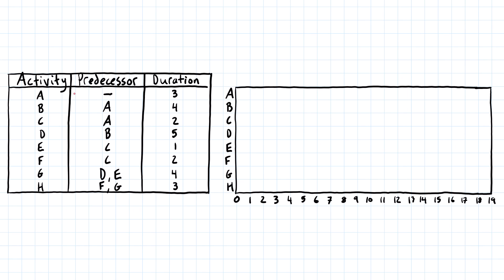In our table of dependencies, we have all of our activities, their predecessor relationships, and the duration of each activity. With the Gantt chart, we want to start with any activity that does not have a predecessor. There could be more than one activity, but in this case it's only activity A. Usually you want to use graph paper or something like coordinate axes — graph paper is a bit easier to see and to line up as we go.